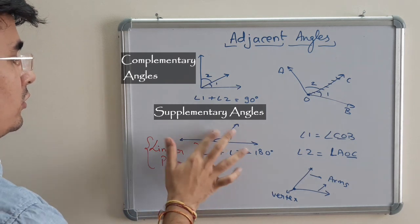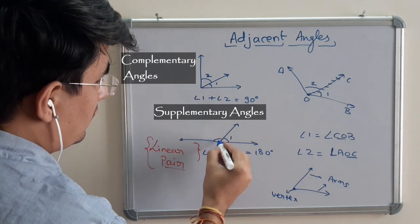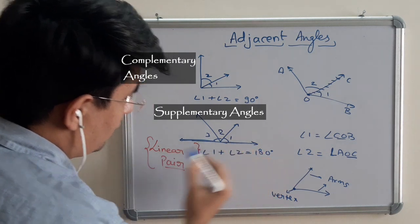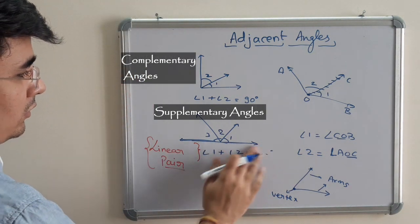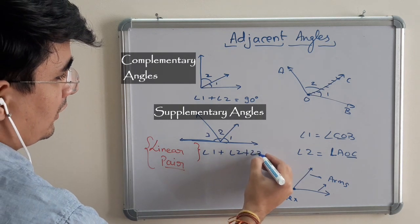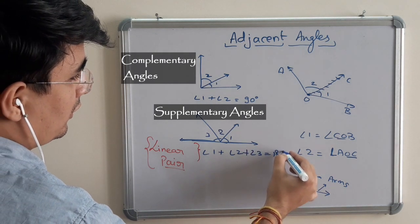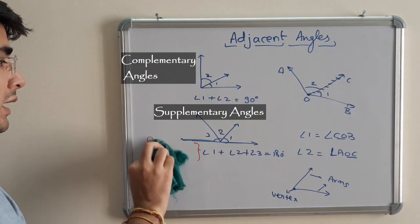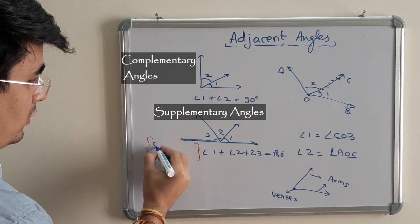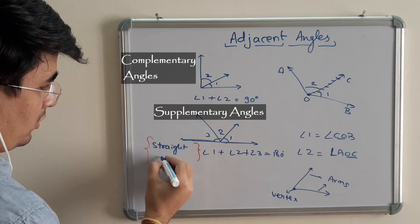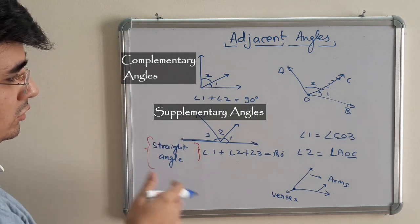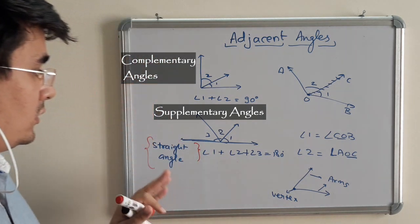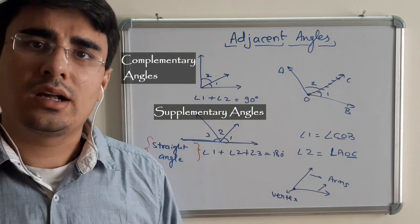What if there are three angles forming a straight line? I am talking about this straight line. There is still, what will happen? Angle 1 plus angle 2 plus angle 3 equals 180 degrees. But now we won't say it is a linear pair. We call it straight angle. So these questions regarding this are very important. I hope this concept is clear, and we will be discussing this in class also.